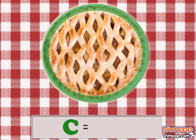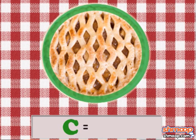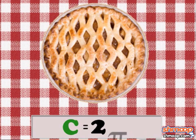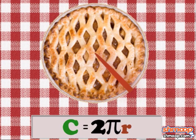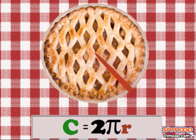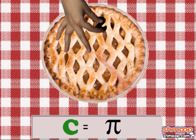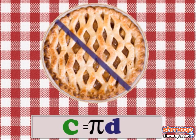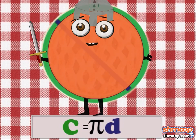The distance around the circle depends on its radius as well as pi. We simply plug in two times pi times the radius, and we get our circumference. We can also substitute the two and the radius with the circle's diameter to get our circumference.